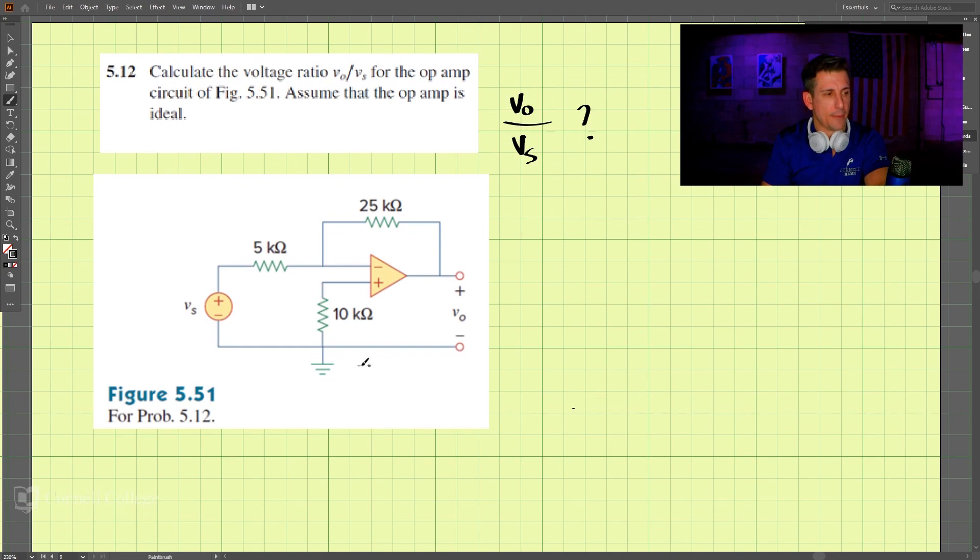It's an ideal op amp, and by taking a look, we see that the ground here, that is 0 volts. Let's take a look at the current here. We can call this I1.